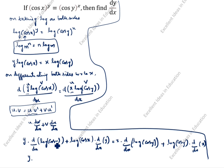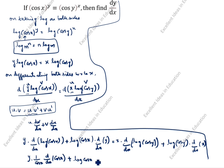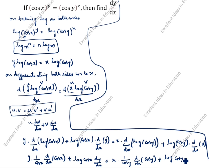The differentiation of log x is 1 by x. So differentiation of log cos x is 1 by cos x times d by dx of cos x — this is the chain rule. So we have y into 1 by cos x times d by dx of cos x, plus log cos x times dy by dx, equal to x into 1 by cos y times d by dx of cos y, plus log cos y. The differentiation of x is 1.